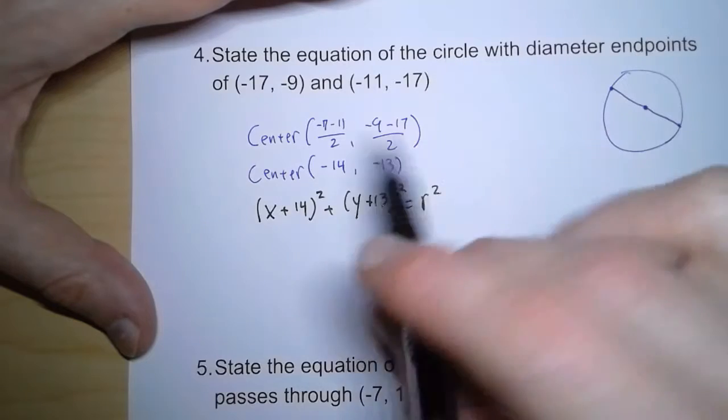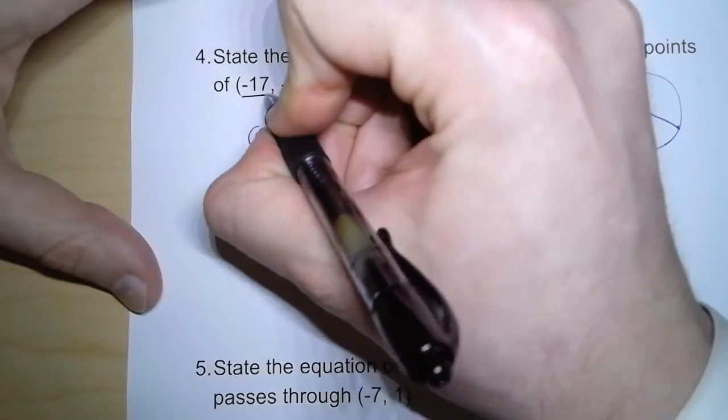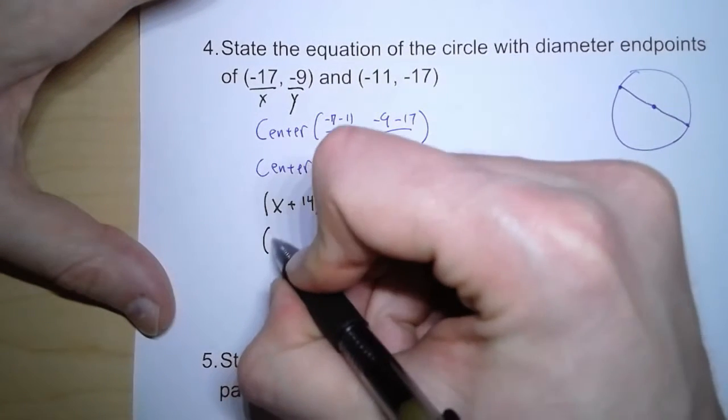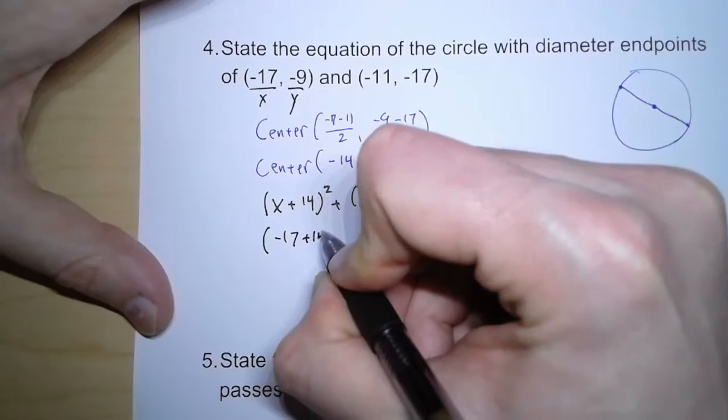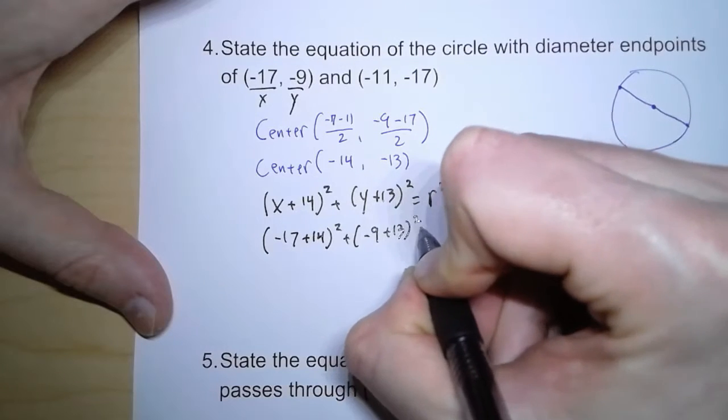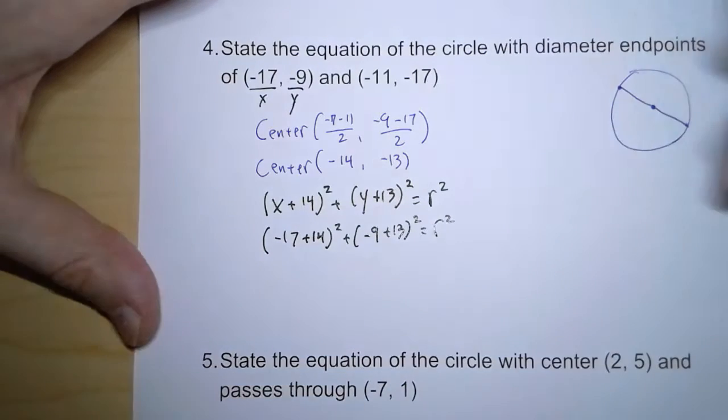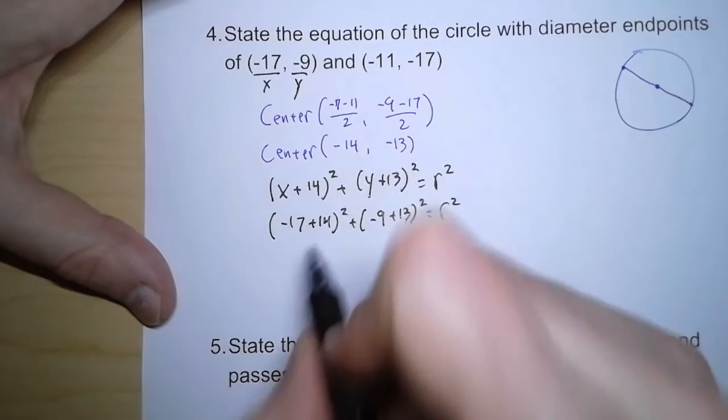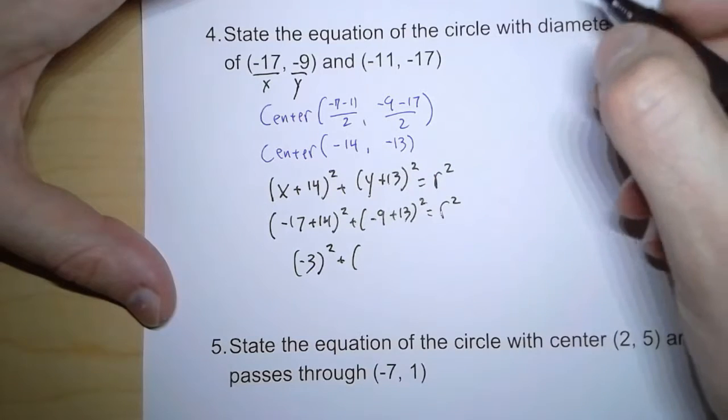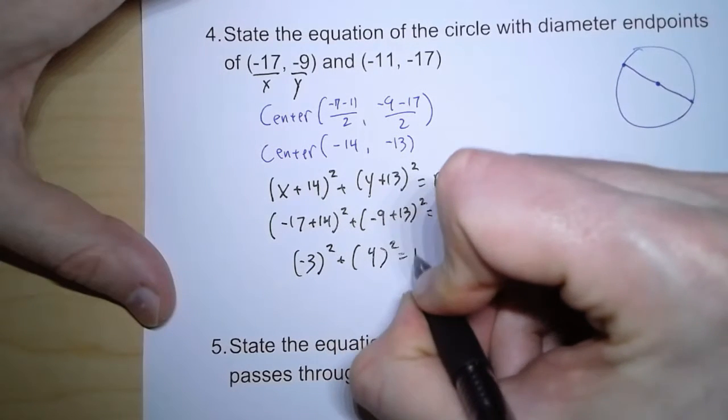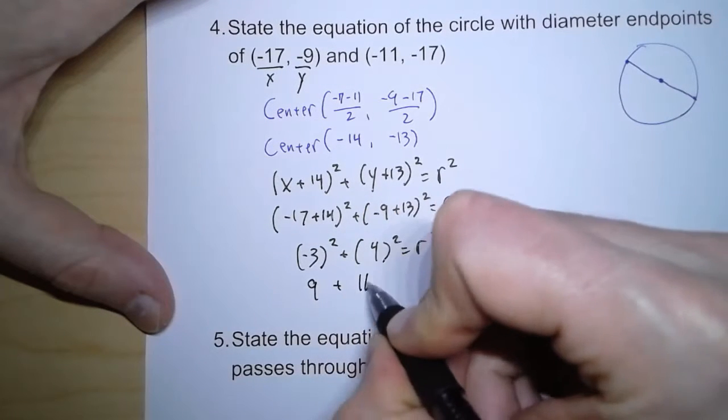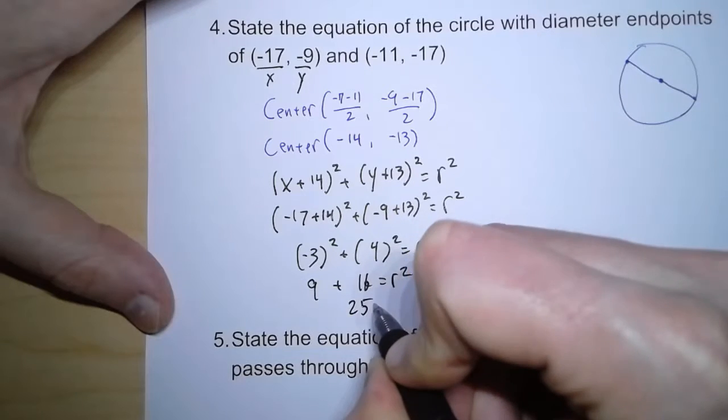But how do we figure that out? Because we need to to write our equation. Well, what we can do is we can substitute one of these points in for x and y. So I'll just pick this, and I'll substitute negative 17 for x, and negative 9 for y. So negative 17 plus 14 squared, plus negative 9 plus 13 squared, equals r squared. So negative 17 plus 14 gives us negative 3 squared. Negative 9 plus 13 gives me 4 squared, equals r squared. So that's 9 plus 16 equals r squared. So 25 equals r squared.